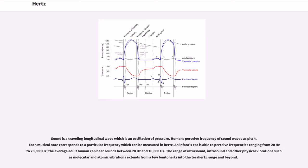Sound is a traveling longitudinal wave which is an oscillation of pressure. Humans perceive frequency of sound waves as pitch. Each musical note corresponds to a particular frequency which can be measured in hertz. An infant's ear is able to perceive frequencies ranging from 20 hertz to 20,000 hertz. The average adult human can hear sounds between 20 hertz and 16,000 hertz. The range of ultrasound, infrasound, and other physical vibrations such as molecular and atomic vibrations extends from a few femtohertz into the terahertz range and beyond.